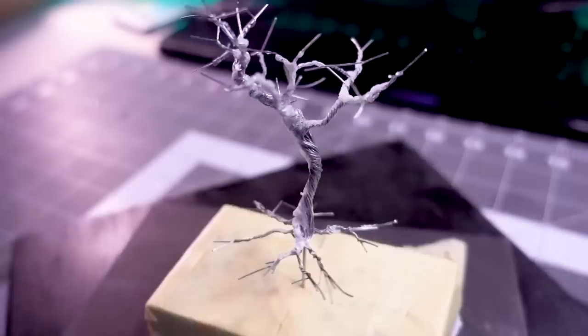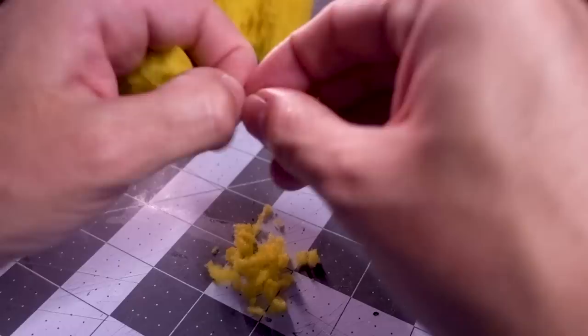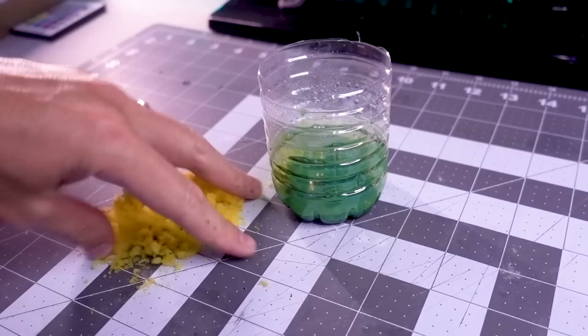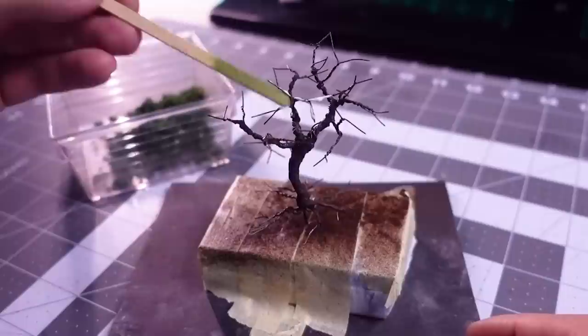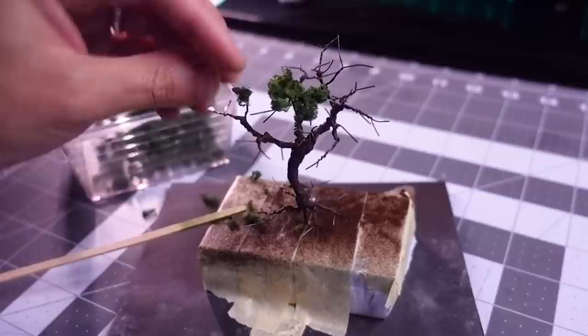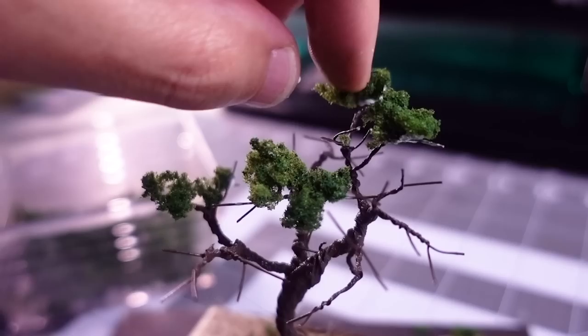For the tree's foliage, I tore and snipped bits of this sponge, then threw it in a container with some watered-down dark green paint. When that had dried, I then added tacky glue to the tips of the branches and added sponge clusters by hand. This took multiple layers over the course of a couple of days, but after a final dusting of flocking and some painting here and there, this was very tree-like.